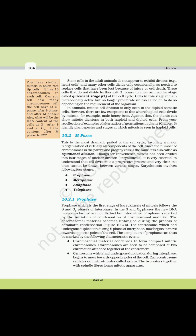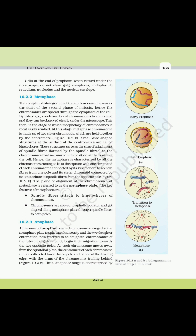The completion of prophase can be marked by the following events: chromosomal material condenses to form compact mitotic chromosomes, seen to be composed of two chromatids attached together at the centromere; the centrosome begins to move towards opposite poles of the cell; each centrosome radiates out microtubules called asters, and together with spindle fibers forms the mitotic apparatus. Cells at the end of prophase do not show Golgi complexes, endoplasmic reticulum, nucleolus, or the nuclear envelope.